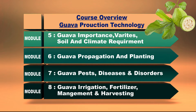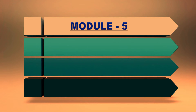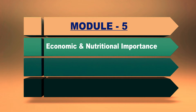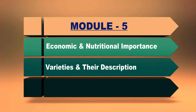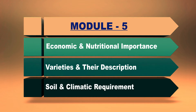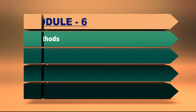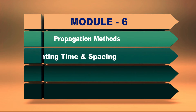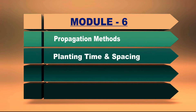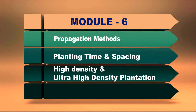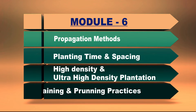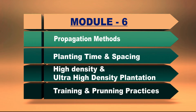The next four modules will cover guava fruit production technology. The fifth module will cover various aspects like economic and nutritional importance of guava, important varieties, their description, as well as soil and climatic requirements of the guava crop. In the sixth module, we will study propagation methods, planting time and spacing for guava plantation, including high density and ultra high density plantation, along with training and pruning practices.